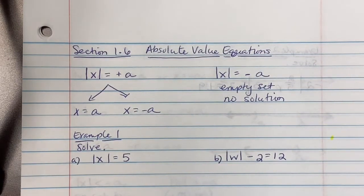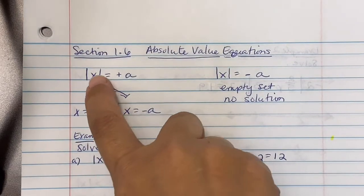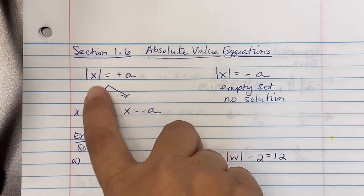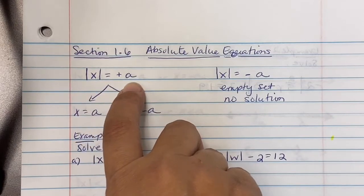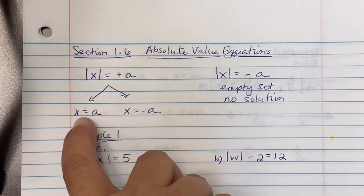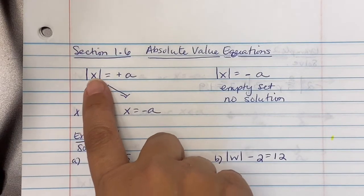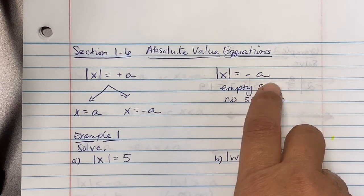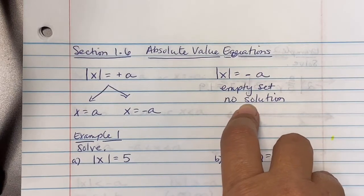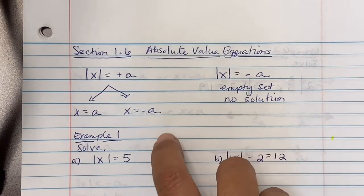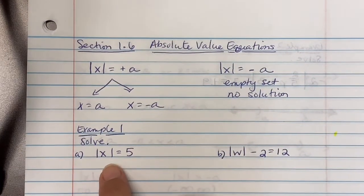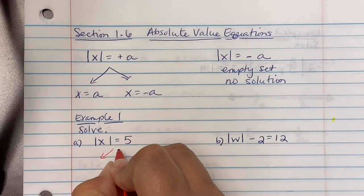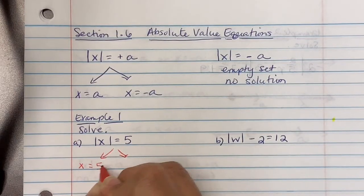Section 1.6: Absolute Value Equations. If we see absolute value of x equaling a positive number, it breaks down into two scenarios: the inside is equivalent to a, and the inside is equivalent to negative a. If you see the absolute value of x equaling a negative number, there is no solution — it is considered an empty set. Example one: solve the absolute value of x equal to five. It's following scenario one, absolute value equals a positive number, so we have two situations: x equals positive 5, and x equals negative 5.